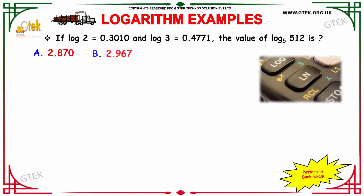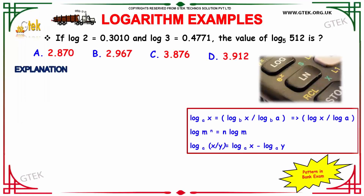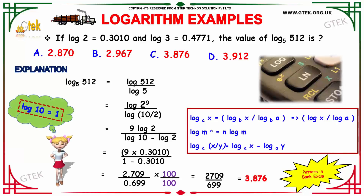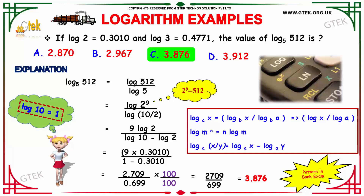Let us see a few examples for logarithm. Given log 2 is 0.3010 and log 3 is 0.4771, the value of log 512 to the base 5 is how much?